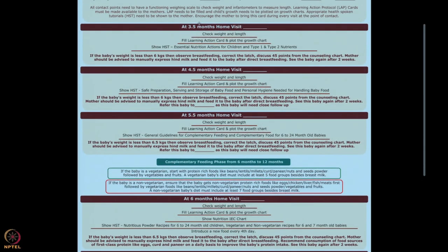Starting from three and a half months of age, we are sensitizing mothers on nutrition. Show them the Health Spoken Tutorial on essential nutrition action for children and type one and type two nutrients. Mention that babies need to start complementary foods after six months of age, not before.